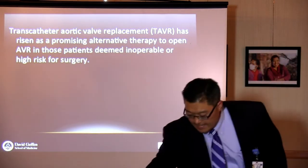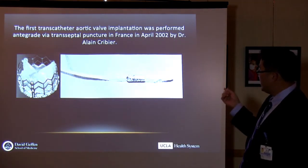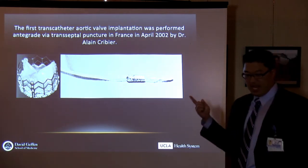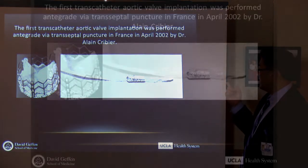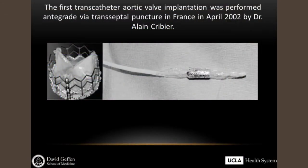Here is a picture of the very first transcatheter valve, placed in Rouen, France by Dr. Alain Cribier in April 2002. It was a very crude balloon with a stent crimped onto it, done to treat a patient who was inoperable and essentially dying of aortic stenosis. But this was the pioneering procedure that led to what we do today.